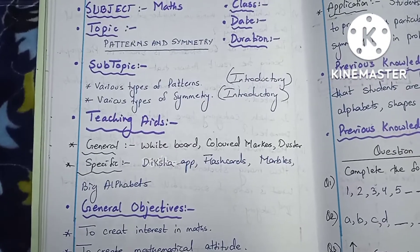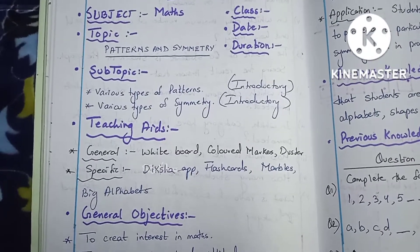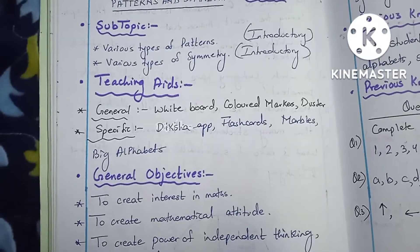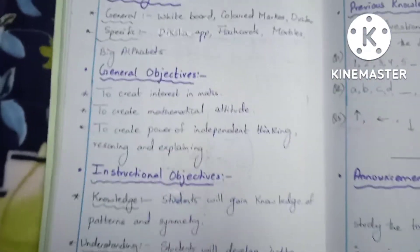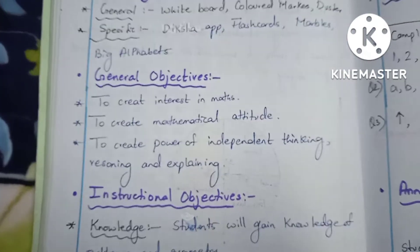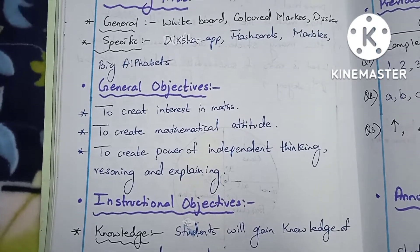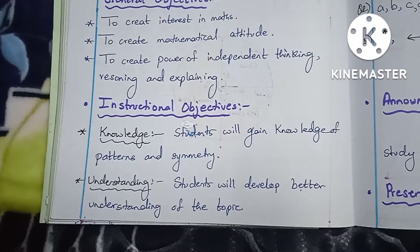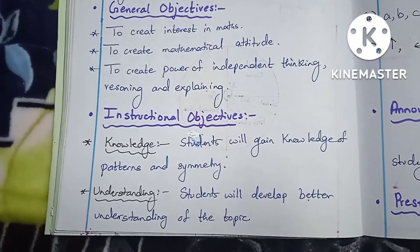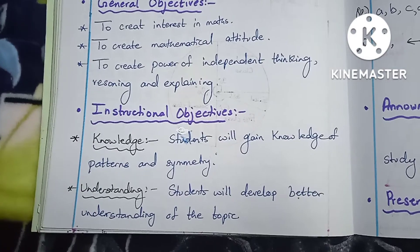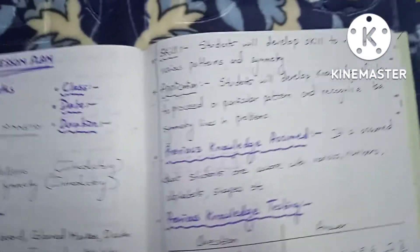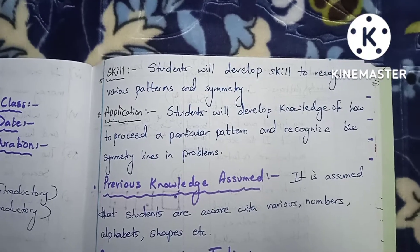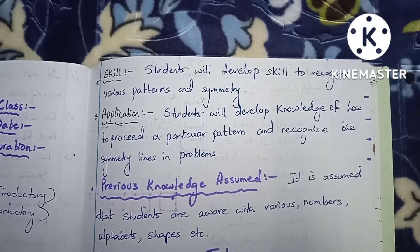Teaching aids include a whiteboard, color markers, dusters, flashcards, marbles, etc. General objectives are to create interest in mathematics, develop a mathematical attitude, independent thinking, and explanation skills.